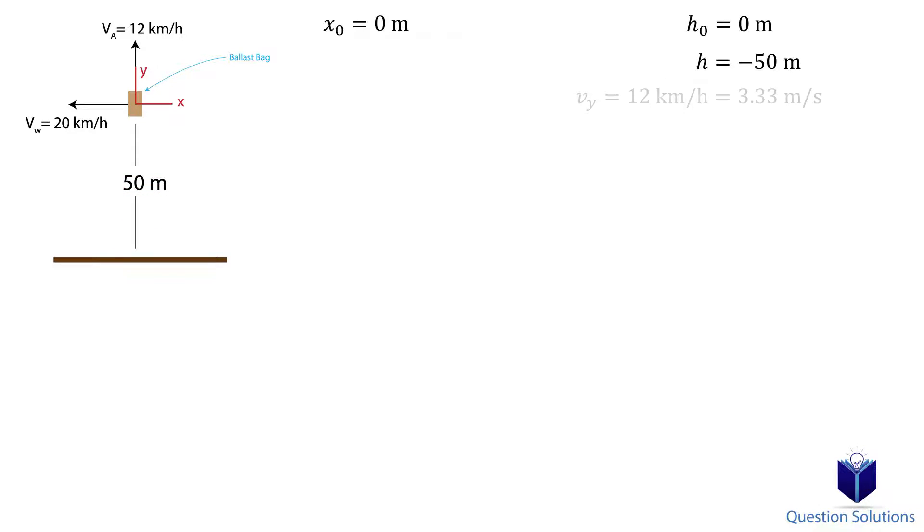We have velocity going upwards, which is 12 kilometers per hour, or 3.33 meters per second. In the horizontal direction, we have the balloon going left, so v equals negative 20 kilometers per hour, or negative 5.55 meters per second. We also have acceleration downwards, which is negative 9.81 meters per second squared.